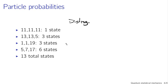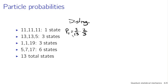Suppose I drew one of these particles at random and wanted to know the probability it would have energy 1. Energy 1 occurs in the state (1, 1, 19). The probability the quantum system is in that state is 3 out of 13 total states, times the probability that, given the system is in state (1, 1, 19), I draw one of the ones — two of the three particles are in state 1, so I multiply by 2 out of 3. That gives the overall probability of drawing a particle in state 1.